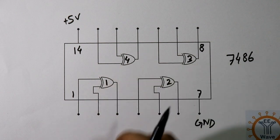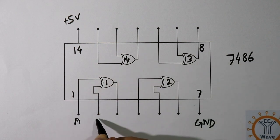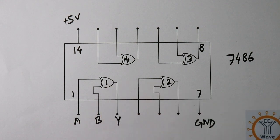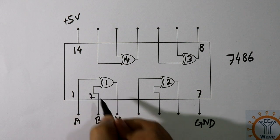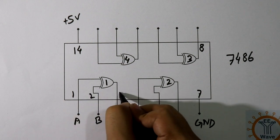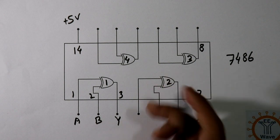Let's look at XOR gate 1. Here input A, input B, and this one is output. That is input A at pin number 1, input B at pin number 2, and output at pin number 3. The other gates are similar to this.